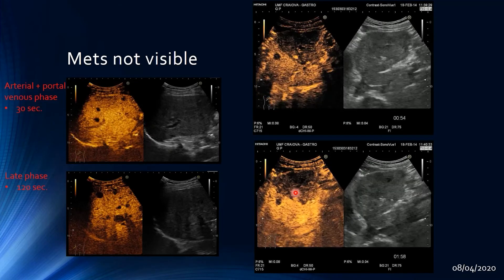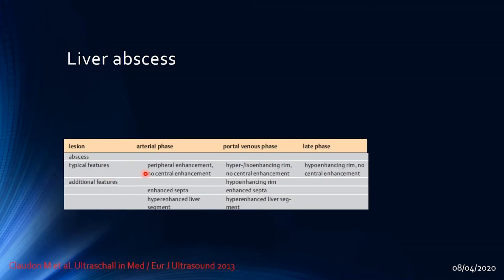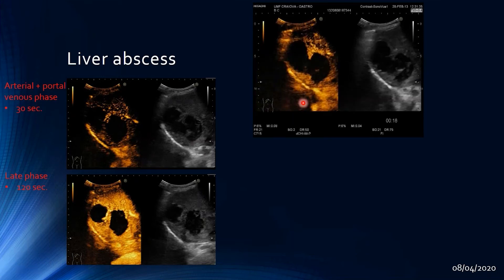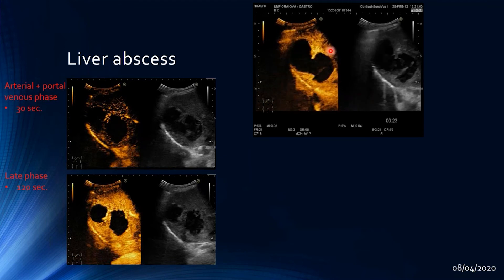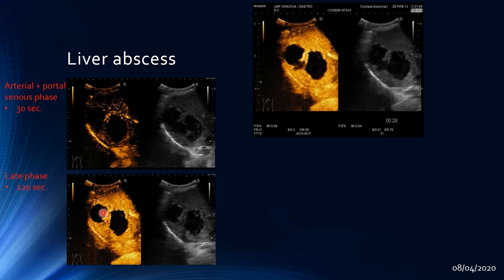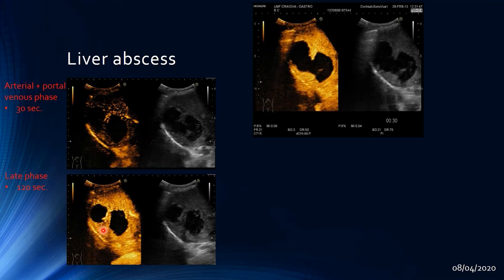Liver abscesses must be differentiated from metastases. Abscesses show peripheral enhancement in the arterial phase with no central enhancement, sometimes with enhanced septations. In the portal and venous phase the rim remains hyper-enhanced, and in the late phase the rim can still be hyper-enhanced without central enhancement — so there is no specific washout seen with liver metastases. A clear example shows enhanced septations and peripheral rim persisting into the late phase.